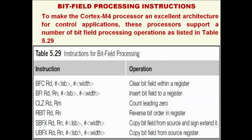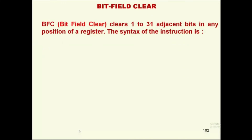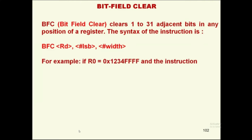The first instruction is Bit Field Clear (BFC). It clears 1 to 31 adjacent bits at any position in a register. The syntax is: BFC Rd, #LSB, #width. For example, if R0 = 0x1234FFFF and the instruction is BFC R0, #4, #8 — the least significant bit position is 4, and from bit 4, 8 bits need to be cleared. The middle two F's are cleared, giving the result 0x1234F00F.